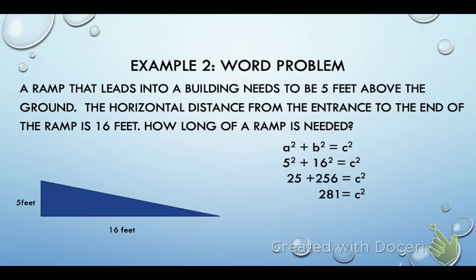Okay, that equals 281. That's not a perfect square. So we're going to round to the nearest foot. If I take the square root of 281, the closest is about 17 feet.